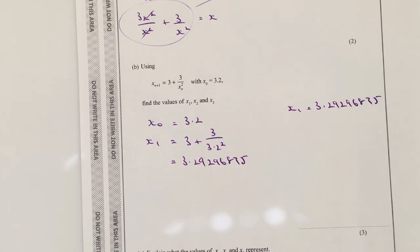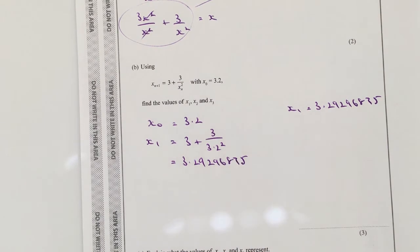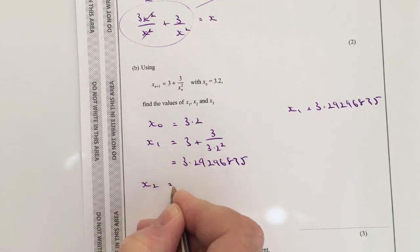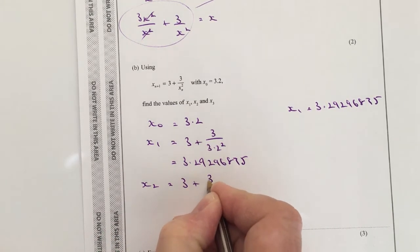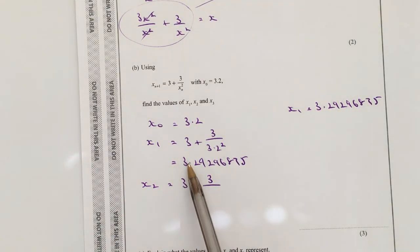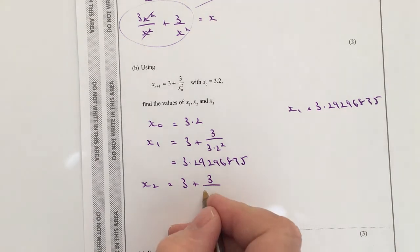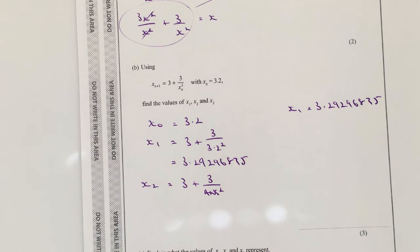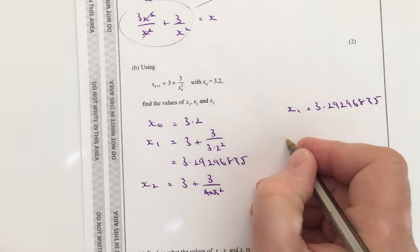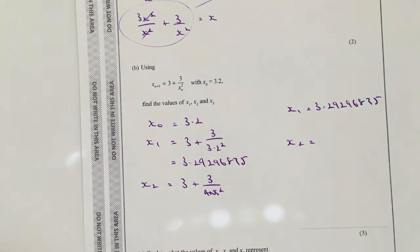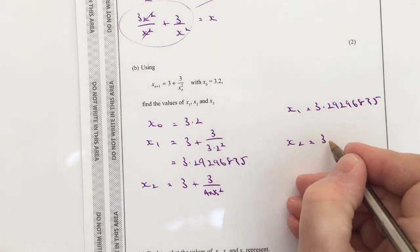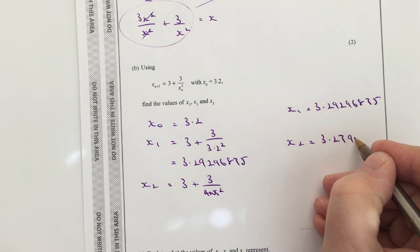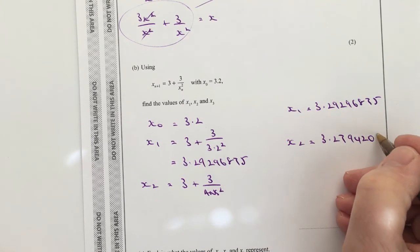Okay, so what we're doing now with iteration: we take this value and we plug it back into the same formula. So it's going to be x2: 3 plus 3 over... Now rather than writing all of that out again, I'm just simply going to put answer squared. So if you use your calculator, you'll be able to do that, and you'll be able to work that value out as x2, and that's going to be equal to 3.276659786.